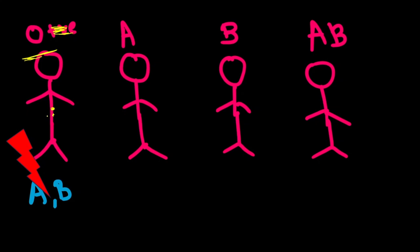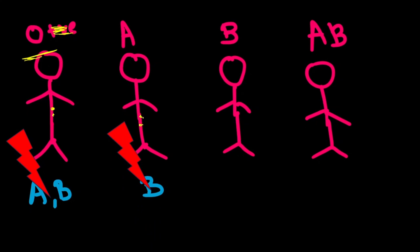An O blood group patient will destroy A and B positive kidneys. An A blood group patient has A antigen in their body, so they have antibodies against B — if a B kidney comes, they will destroy it, but an A kidney they will accept. A B blood group patient has B antigen and antibodies against A, so if an A antigen kidney comes, they will destroy it.